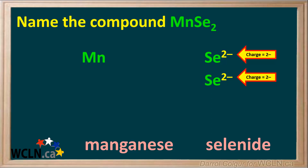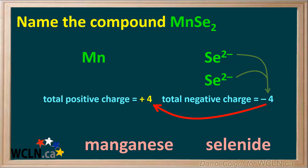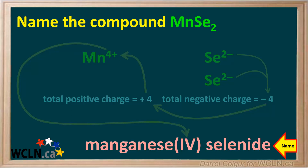Now we add up the negative charges and we see that the total negative charge is negative 4, which means the total positive charge must be positive 4. The total positive charge and negative charge always adds up to zero. Since there's only one manganese ion, it must have a charge of positive 4. Therefore, we add the roman numeral 4 or IV after the name of the metal. Notice we always write parentheses around the roman numeral. And the final name of our compound is manganese(IV) selenide. Unless the name is at the beginning of a sentence, compound names usually start with lowercase letters rather than capital letters.